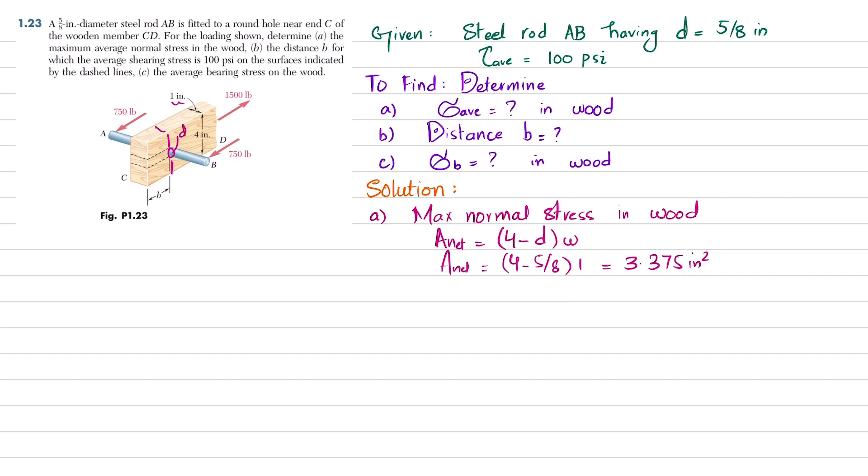We know that average normal stress equals load per unit area. So load is given as 1500 tensile force, so 1500 divided by net area 3.375, which gives you 444 psi. This is the answer of our first part: average normal stress in wood is 444 psi.